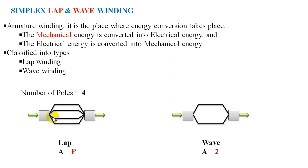As you can see, the current enters and splits, so lap winding can take more current compared to wave. This makes lap winding suitable for high current and thus low voltage applications. Wave is used for low current and thus high voltage applications. In the winding diagram, voltages add in wave and currents add in lap — each path is parallel in lap and in series in wave.